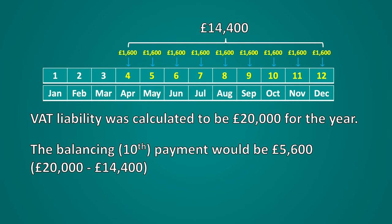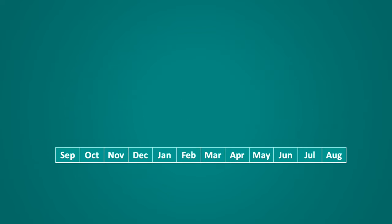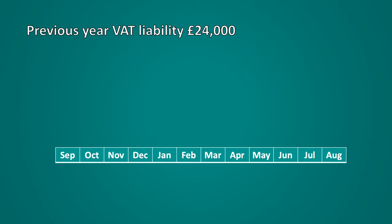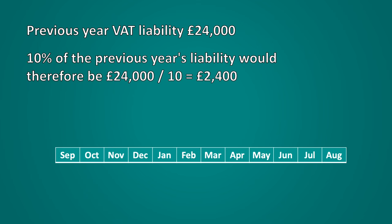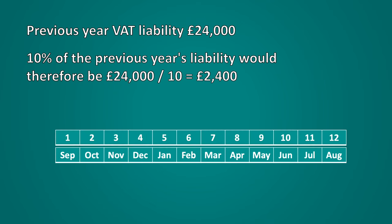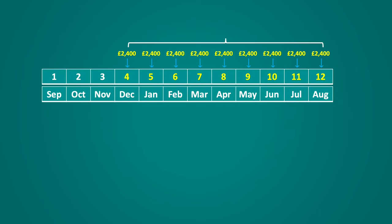Let's now have a look at another example. A business's financial year runs from September through to August and the previous year's VAT liability was £24,000. The monthly payment amounts would be calculated as £24,000 divided by 10, giving you £2,400. Remember, payments need to be from months 4 through to 12, so if the financial year runs from September to August, the fourth month would be December, making the first payment, followed by 8 further payments through to August. This would make nine payments of £2,400, equalling £21,600.